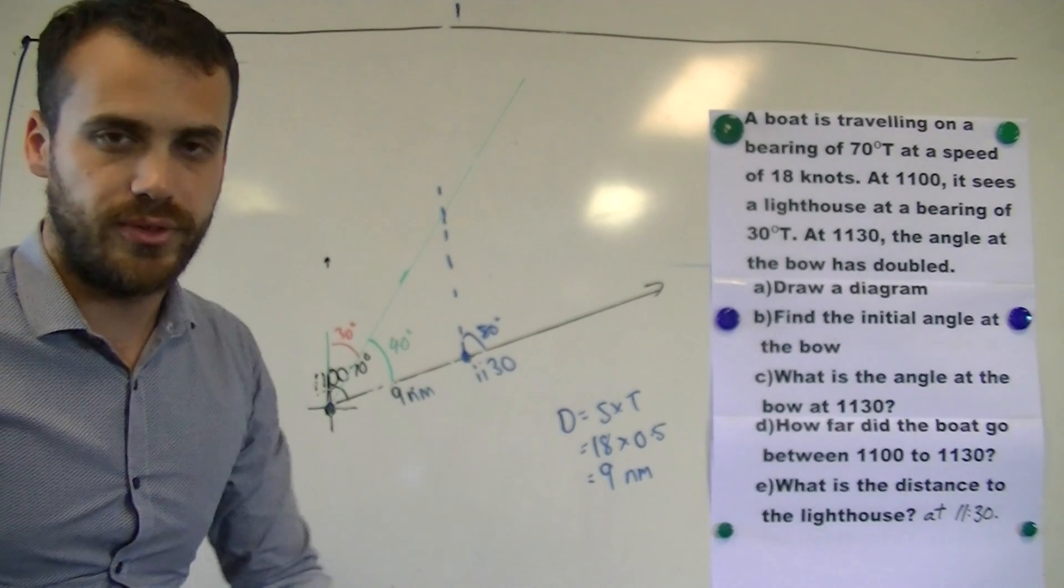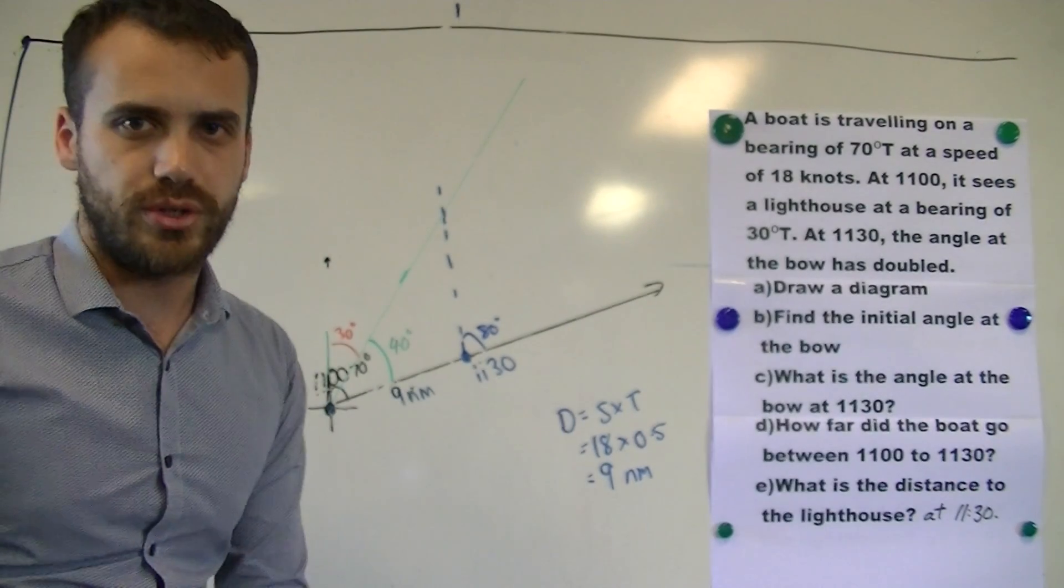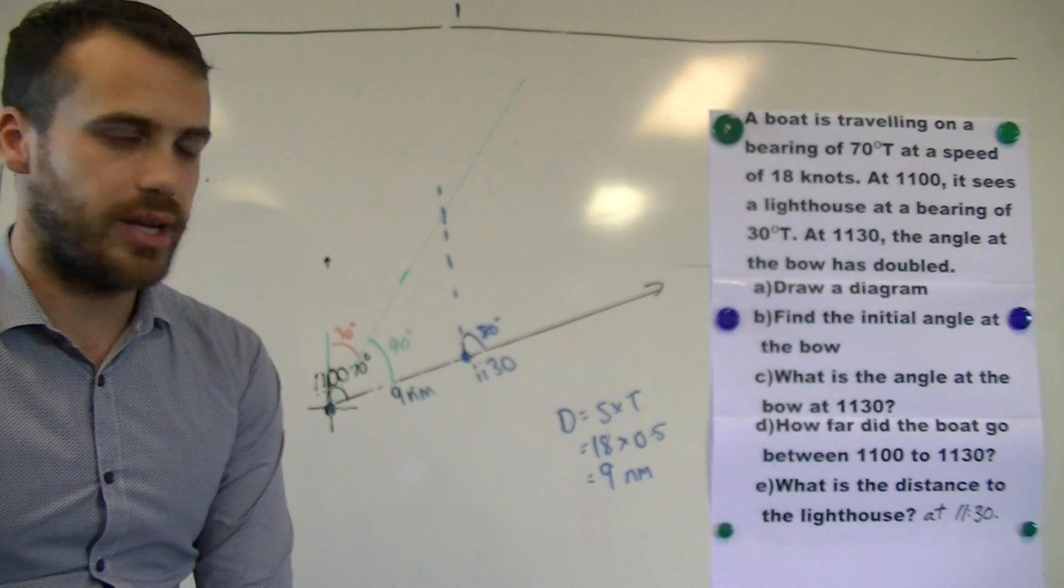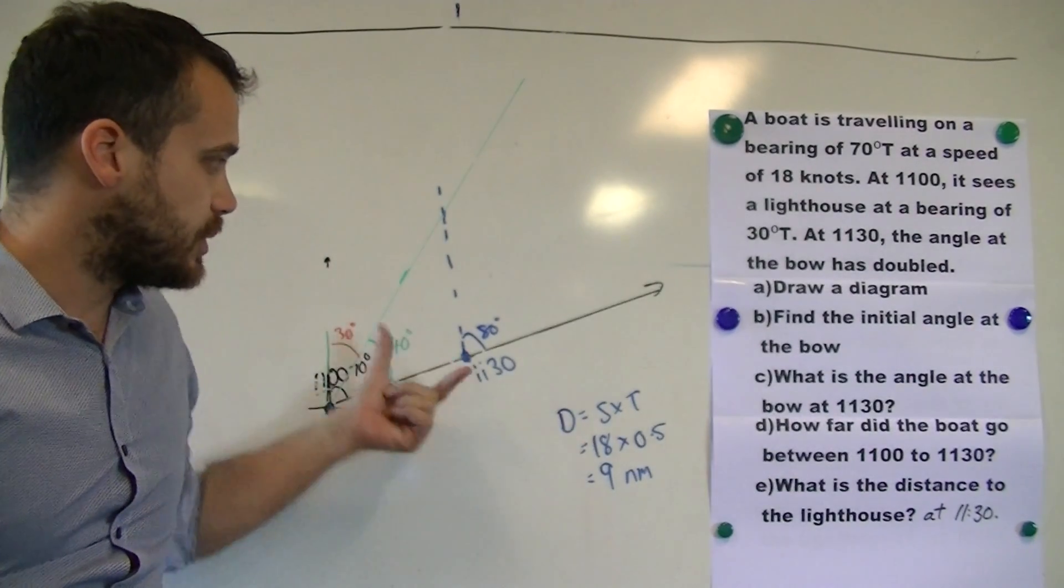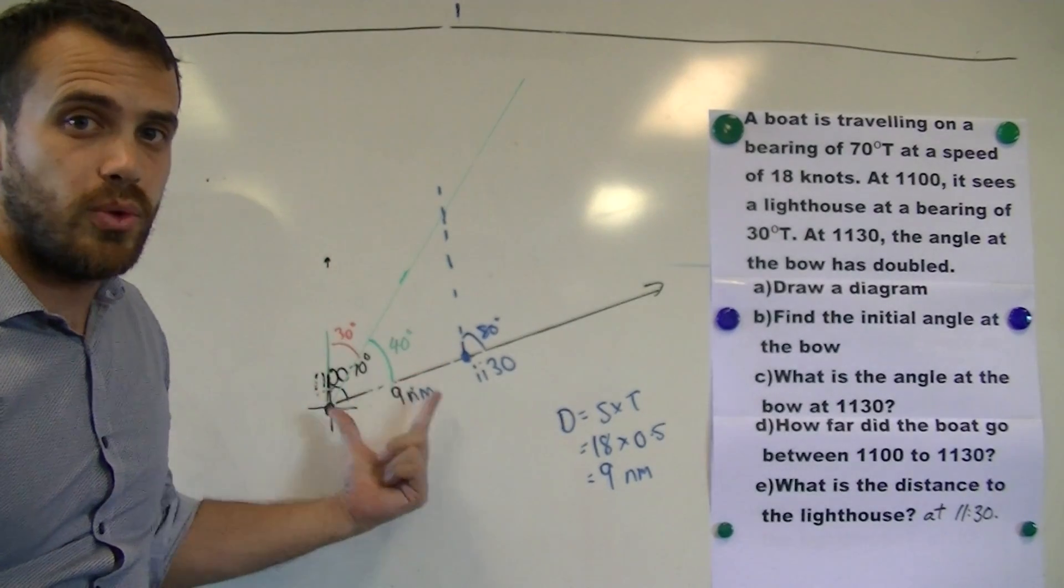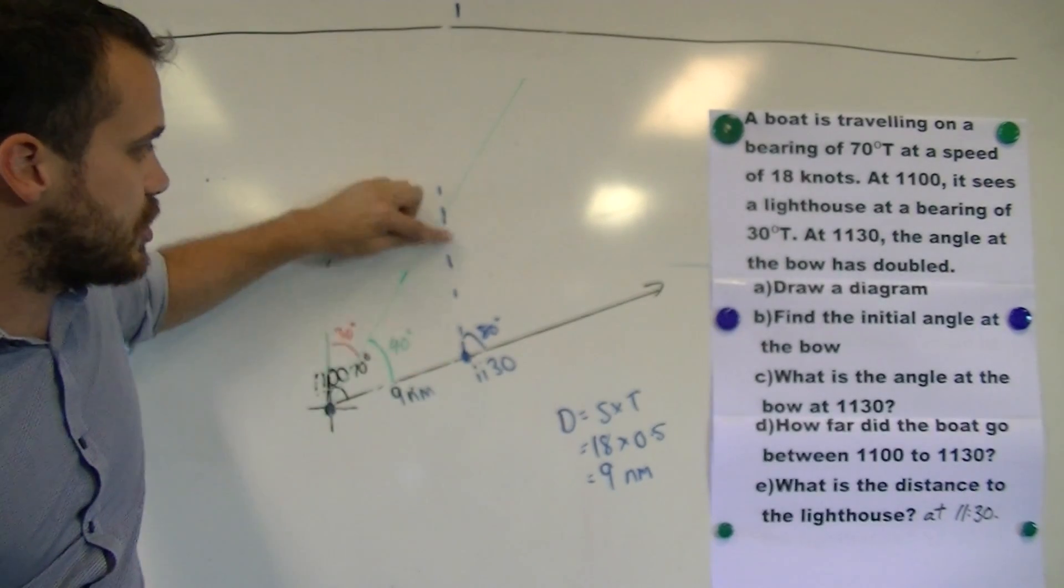Now the payoff, the big, magical, why we do this whole thing. What is the distance to the lighthouse at 11:30? Now, because of doubling this angle at the bow, what we've managed to create is an isosceles triangle.